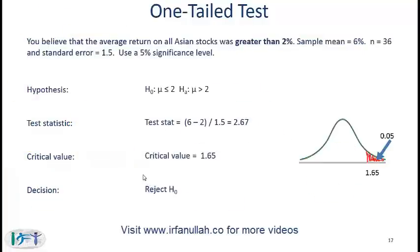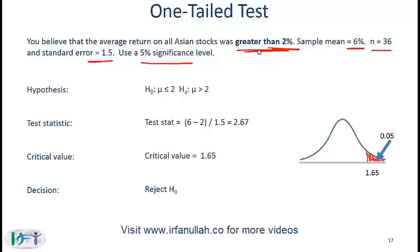Now we go to a one-tailed test. With a one-tailed test, as the name implies, you deal with just one tail. You believe that the average return on all stocks was greater than 2%. The sample mean is 6%, n is 36, the standard error is 1.5, and you use 5% significance. Whenever your belief is that the return is greater than or less than something, you are dealing with a one-tailed test. When your belief is that something is not equal to a value, you are dealing with a two-tailed test.